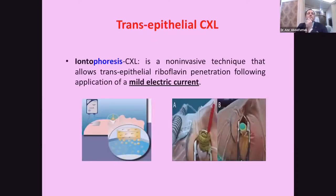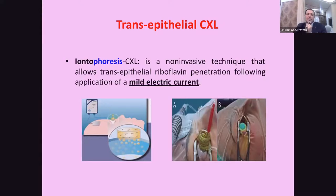Another protocol is called iontophoresis cross-linking. It is a non-invasive technique that allows trans-epithelial riboflavin penetration following application of a mild electric current. The mild electric current is assumed to facilitate and help penetration of riboflavin into the corneal stroma.